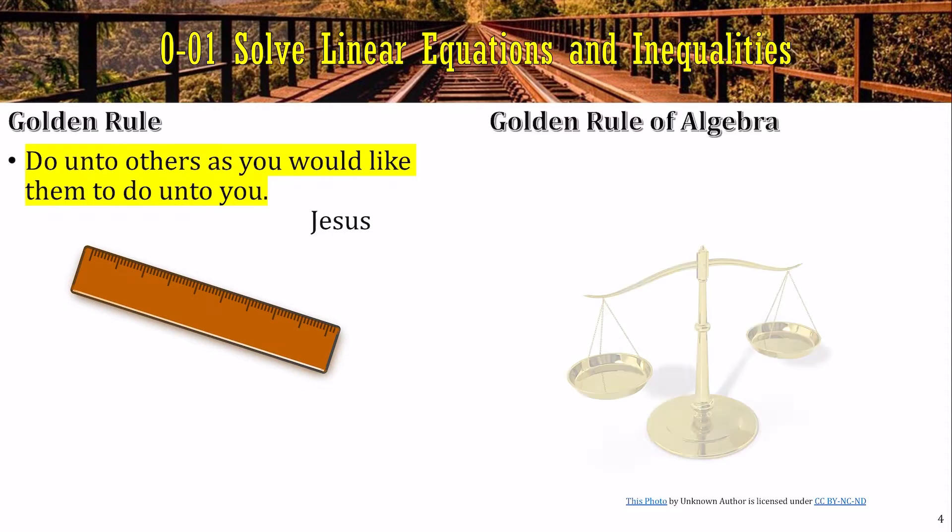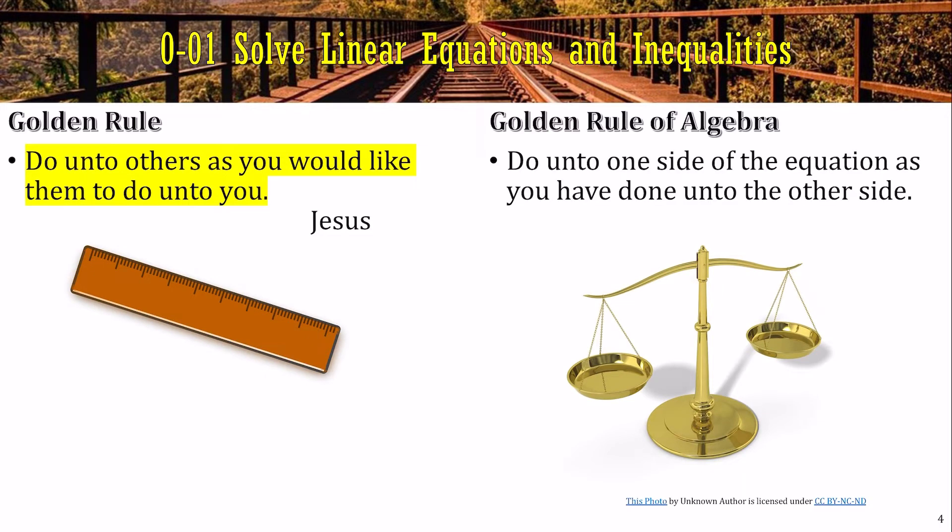Algebra also has a golden rule. And it is, do unto one side of the equation as you have done unto the other side of the equation. So whatever you do, do it to both sides of the equation.